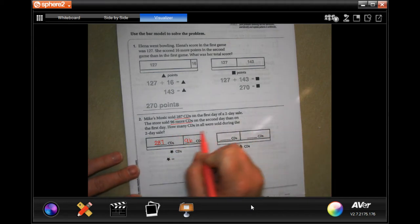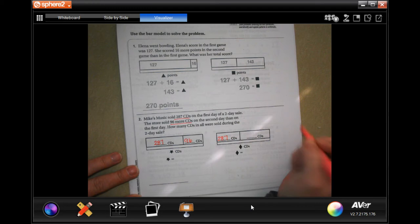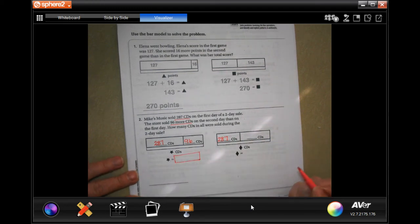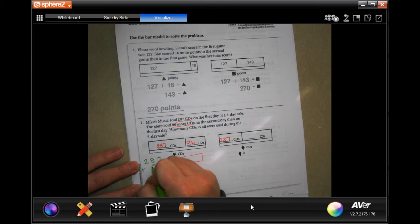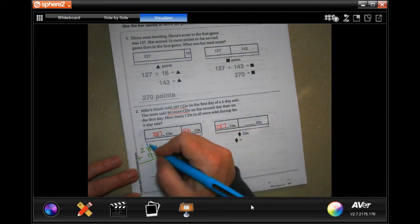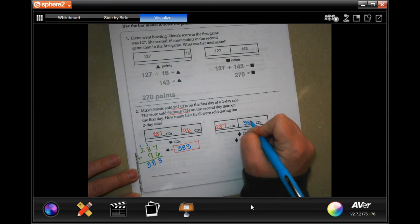Now, how many CDs were sold in all during the two-day sale? Well, the first day was 287. So, that number won't change. The second number is going to be this number. So, we're going to do 287 plus 96. 7 plus 6 is 13. Carry the 10. 1 plus 8 is 9. Plus 9 more is 18. Again, carry the 10. And 1 plus 2 is 3. So, 383. That's what this number is.